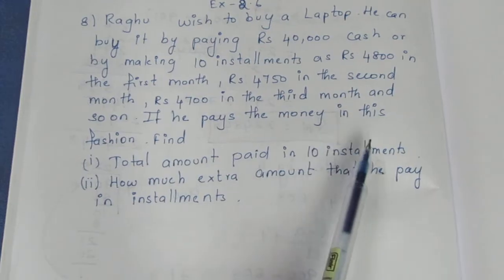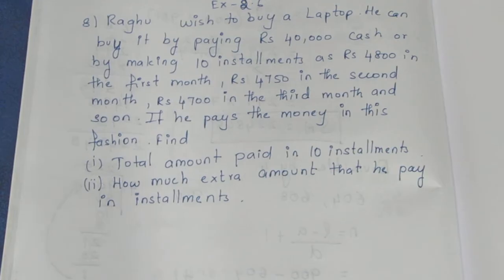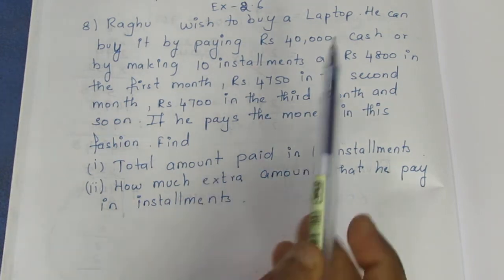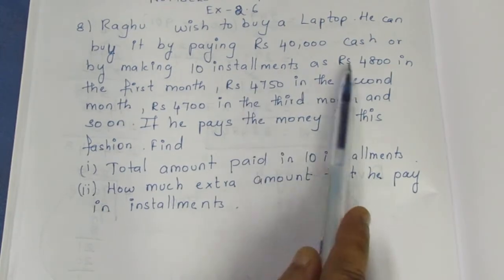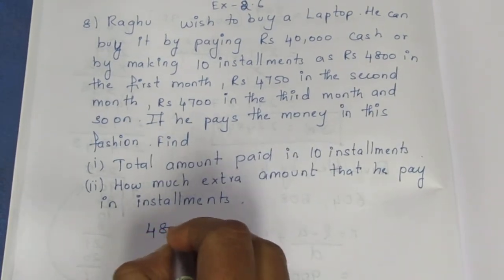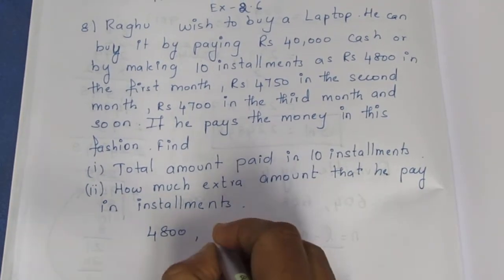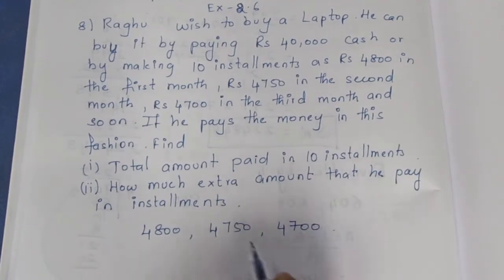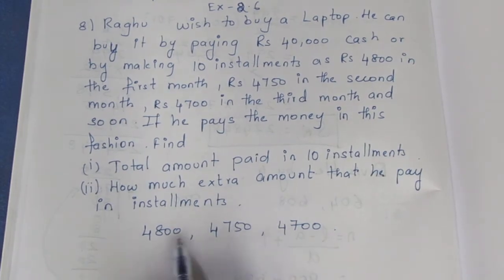We also need to find how much extra amount is paid in installments compared to cash. If you pay in installments, you pay extra. The installments are 4,800, 4,750, 4,700 — each decreasing by 50 rupees, so the common difference is minus 50.